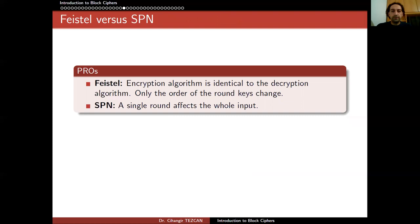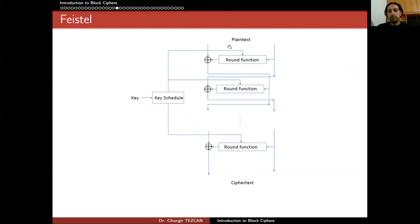There is no definitive answer for which type is better — it depends on your application. Looking at the pros for Feistel ciphers: the encryption algorithm is identical to the decryption algorithm; only the order of the round keys changes. In the encryption part you follow the picture from top to bottom with the right part going into the round function. When decrypting, the ciphertext's right part also goes to the round function in the same way. The direction of the arrows does not change when encrypting or decrypting — this is a key advantage of the Feistel cipher.